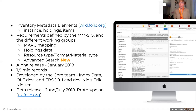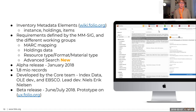The alpha release was released January 2018 and holds 1.8 million records from Harvard University Library. The inventory app is developed by the core team, which is a large team counting developers from Index Data, the OLE developers, and EBSCO. The lead developer is Nilson from Index Data.